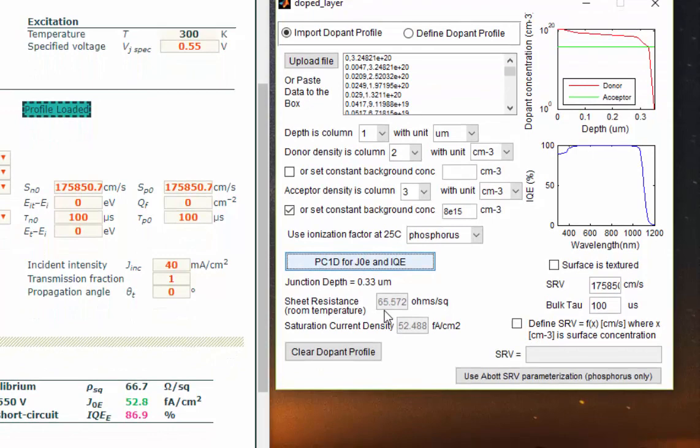So now we can hit this button PC1D for J0E and IQE. Wait one moment. And we produce numbers that are fairly consistent with Aetna. Sheet resistance is 65.6.